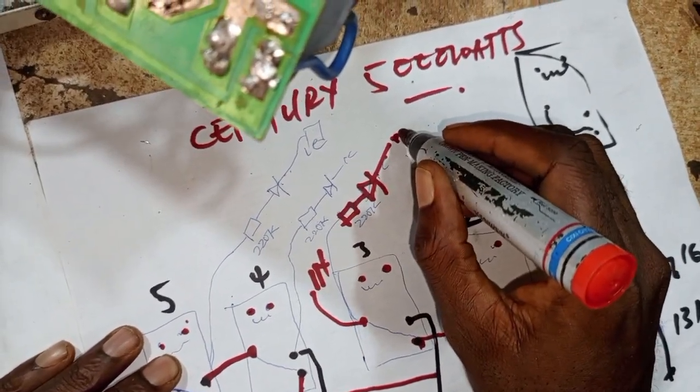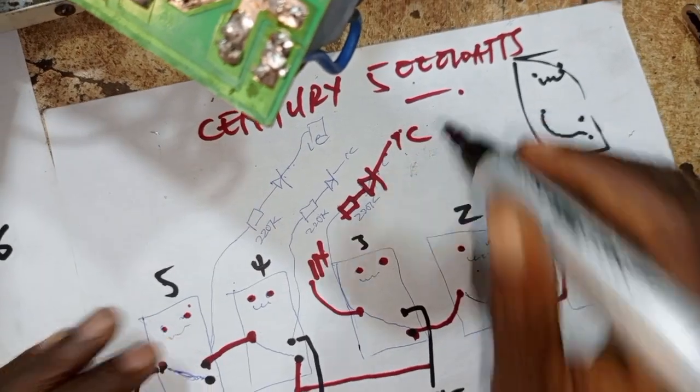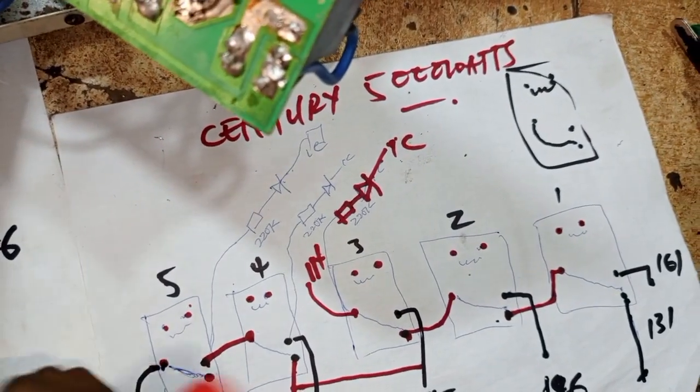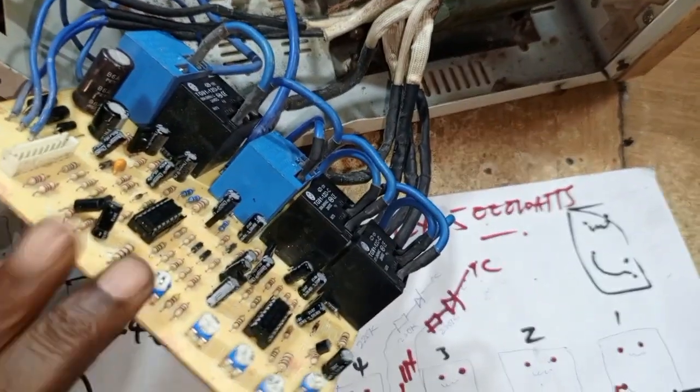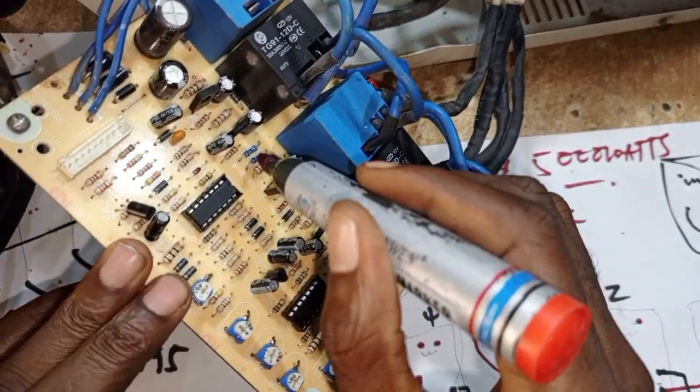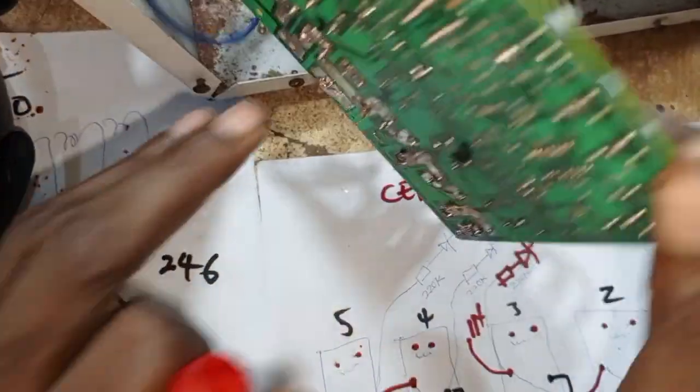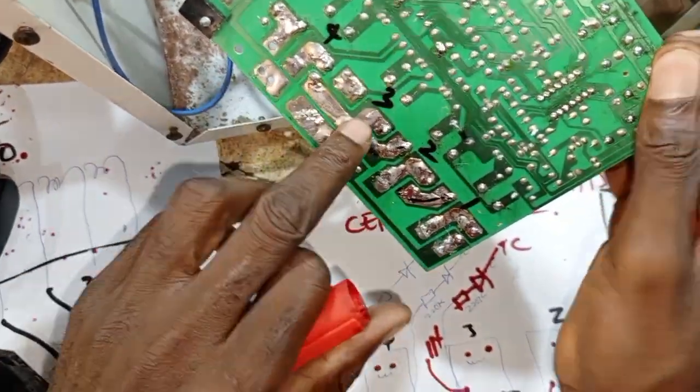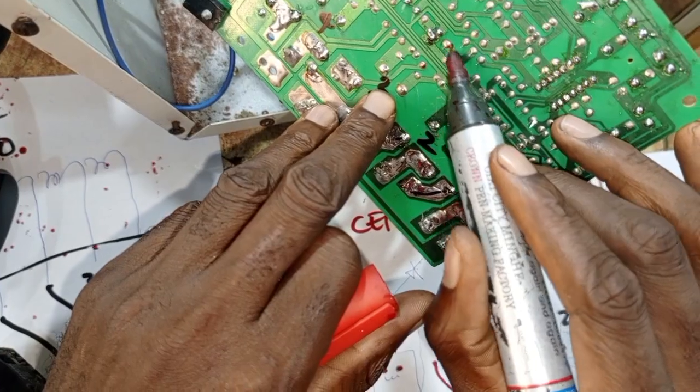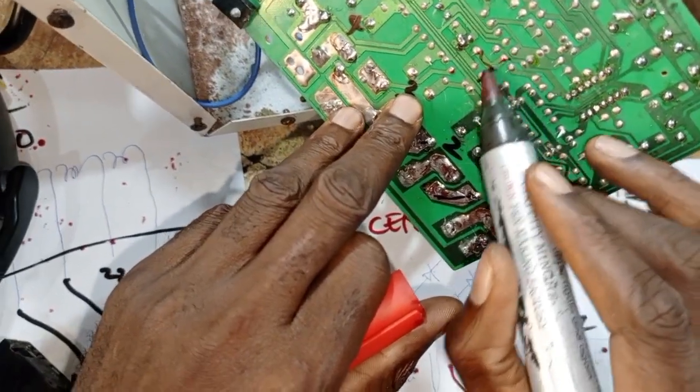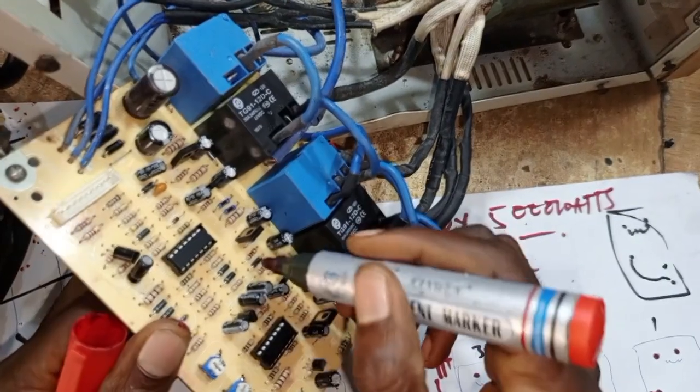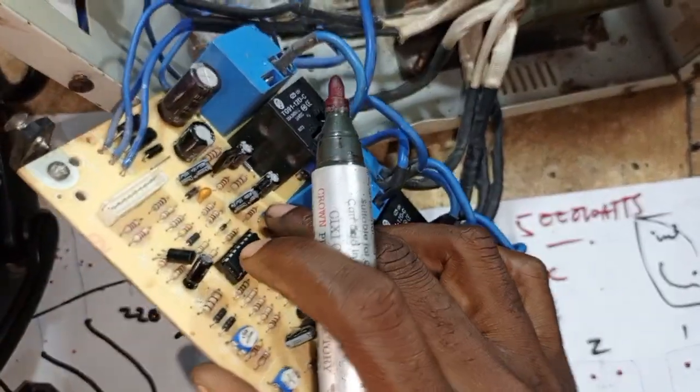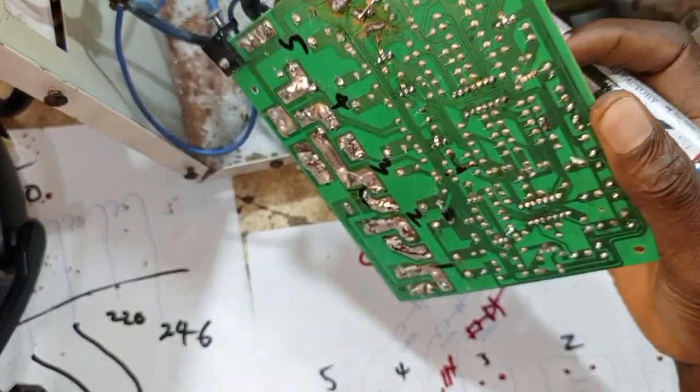That's why when you look here, trace it to this place, you see some 220k - one, two, three. This is it - one, two, three. They link to a diode, this is a diode.